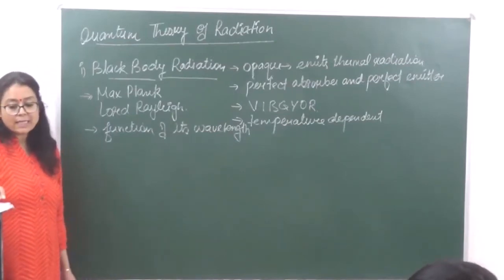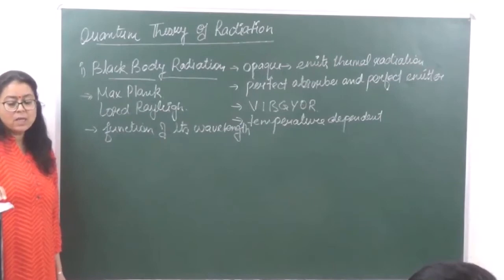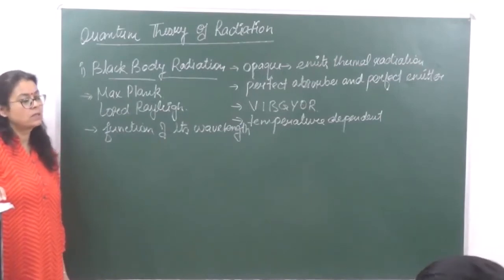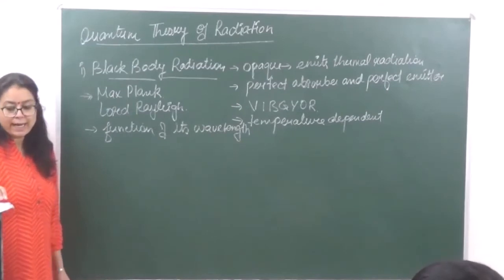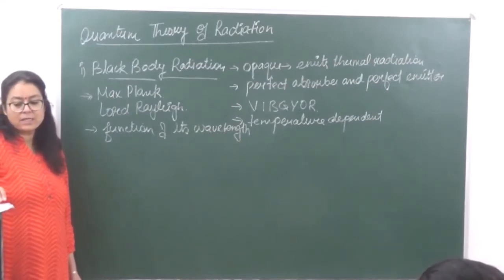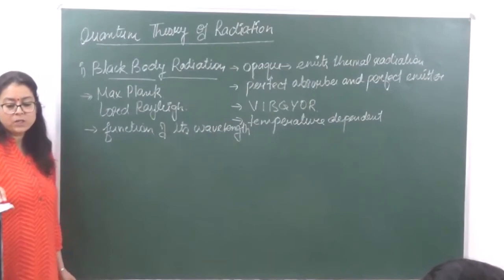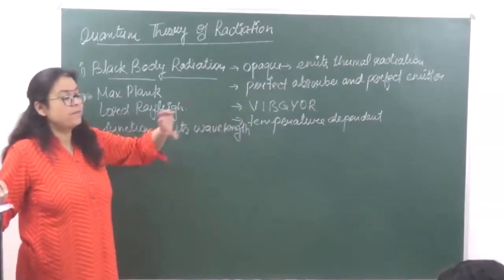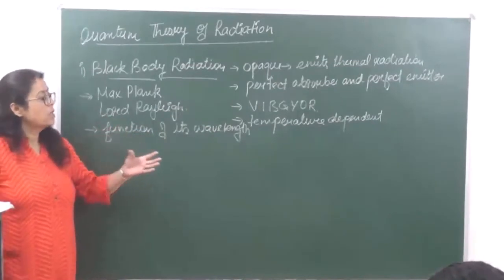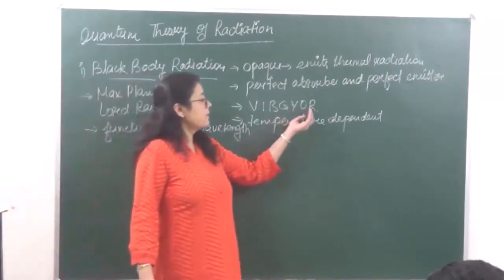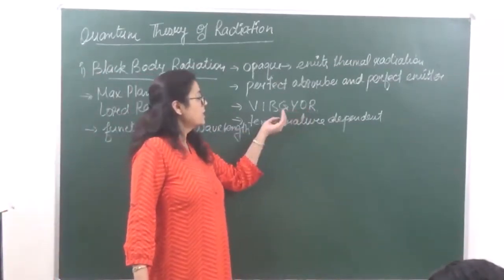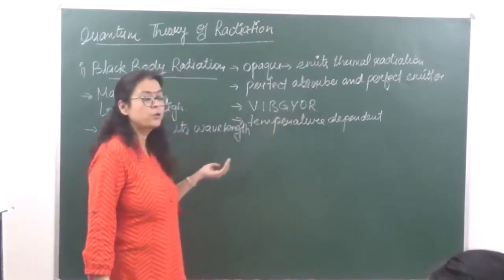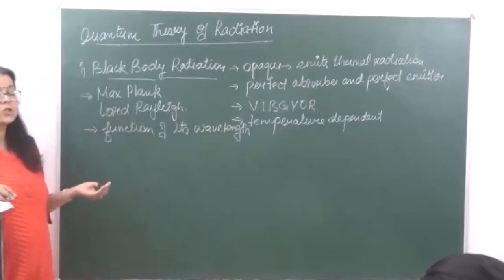As the temperature of the black body increases, the total amount of light emitted per second increases, and the wavelength of the spectrum shifts to the blue color. If we keep increasing the temperature, it starts getting red, then orange, then green, then blue. It keeps shifting towards blue, and blue has a shorter wavelength.